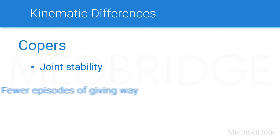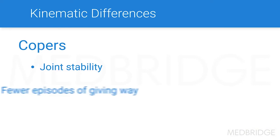Copers are going to be those people that have serious joint stability. They're going to have few to no episodes of giving way in the joint, their knee range of motion is going to be somewhat normal, and they're going to be able to demonstrate normal forces — impact forces — during functional activities and gait, for example.